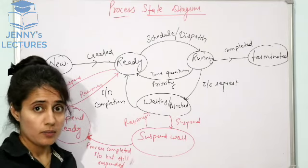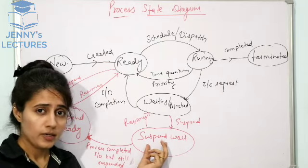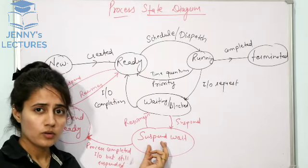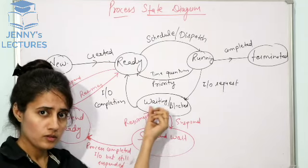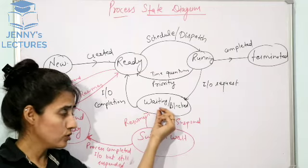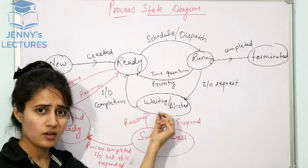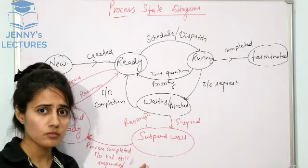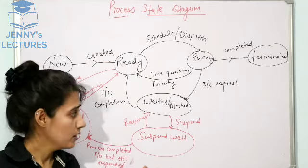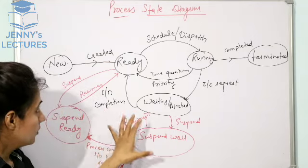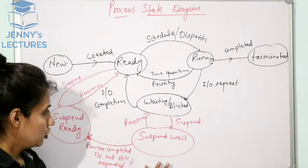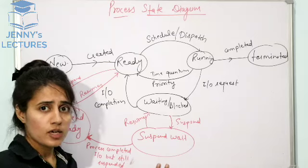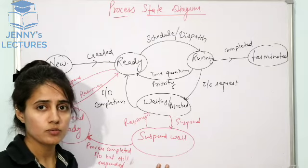One question may be: why does a process that completed its I/O operation go to suspend ready instead of back to waiting state? The answer is that if it resumed back to the waiting state, it would again go to the blocked state. So it transitions to suspend ready instead.